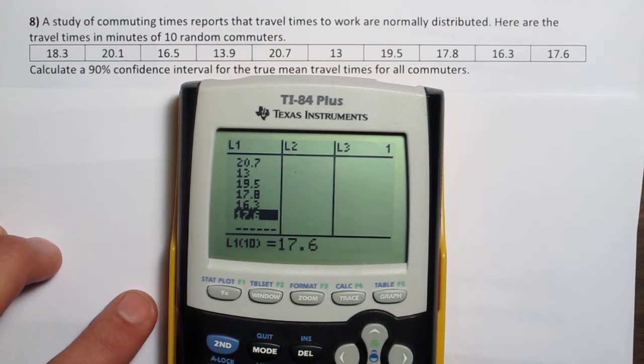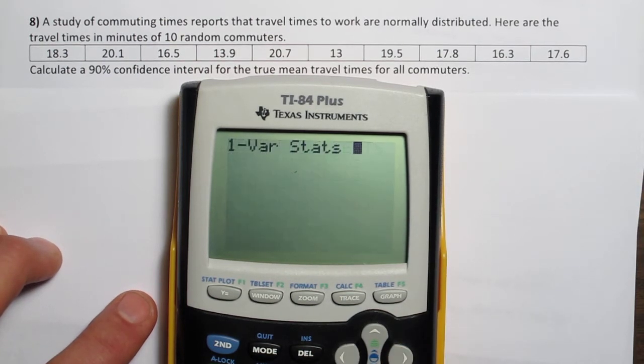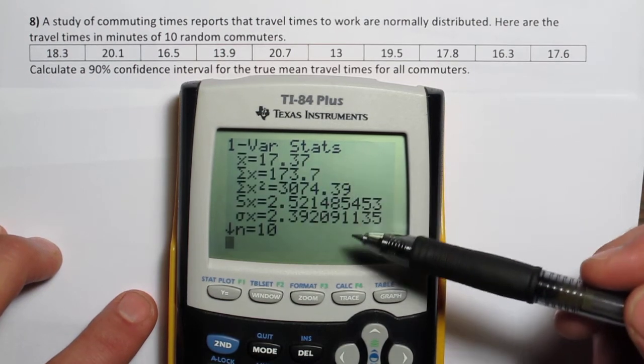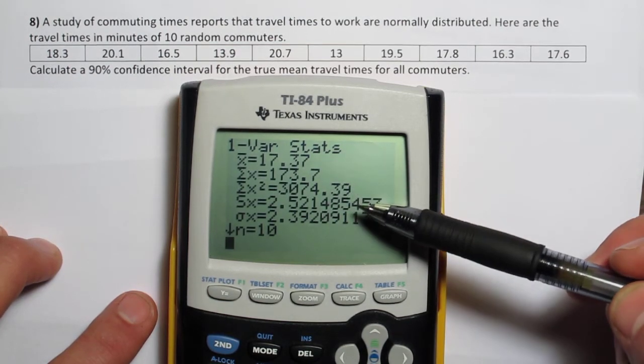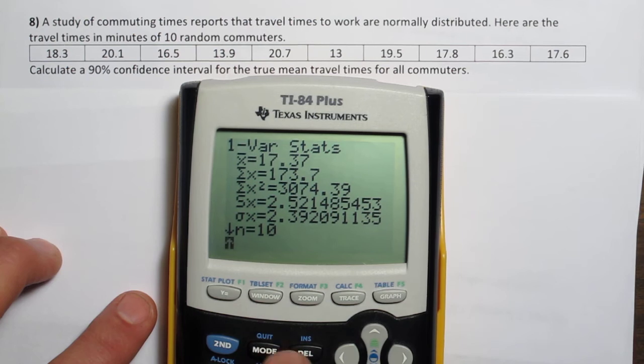Now we could do 1-var statistics on this and it would actually tell us all the stuff we need to input. There's our sample mean, there's our sample standard deviation. However, you can do this an easier way.